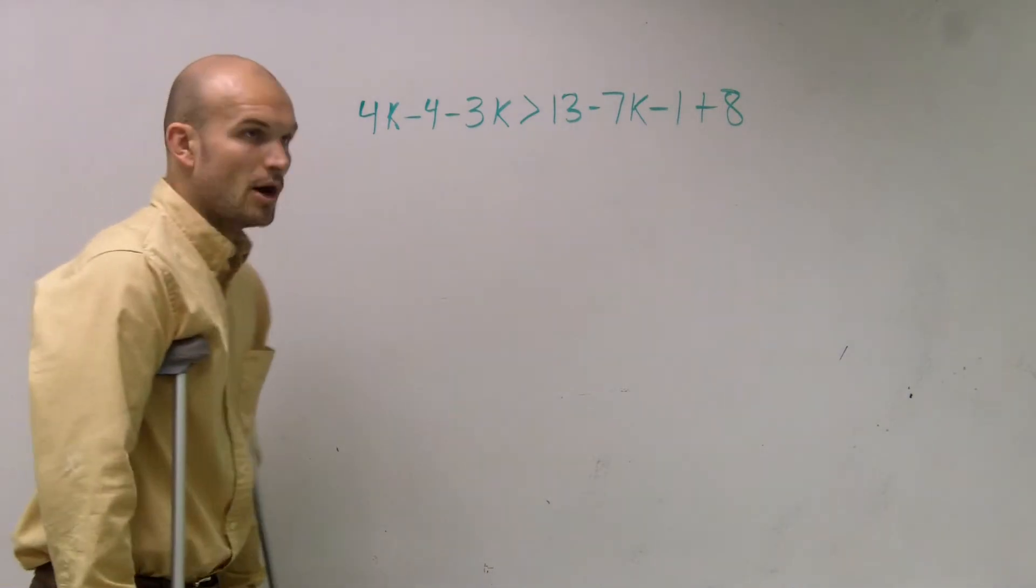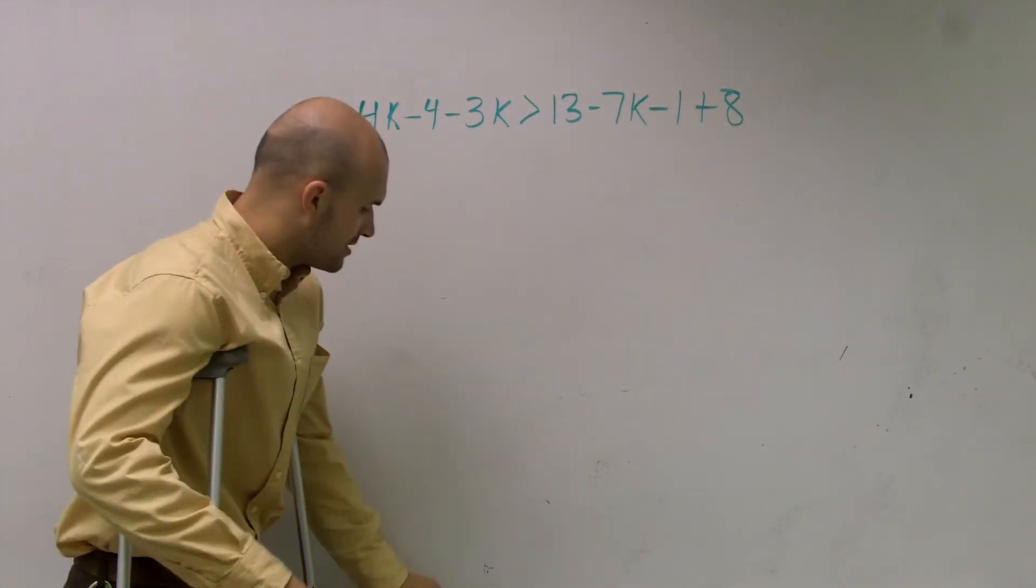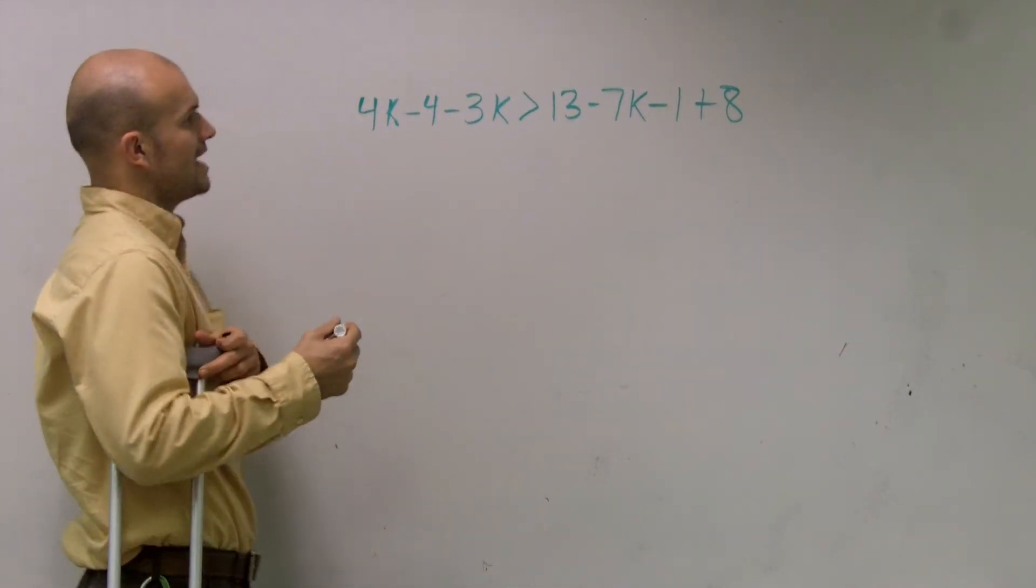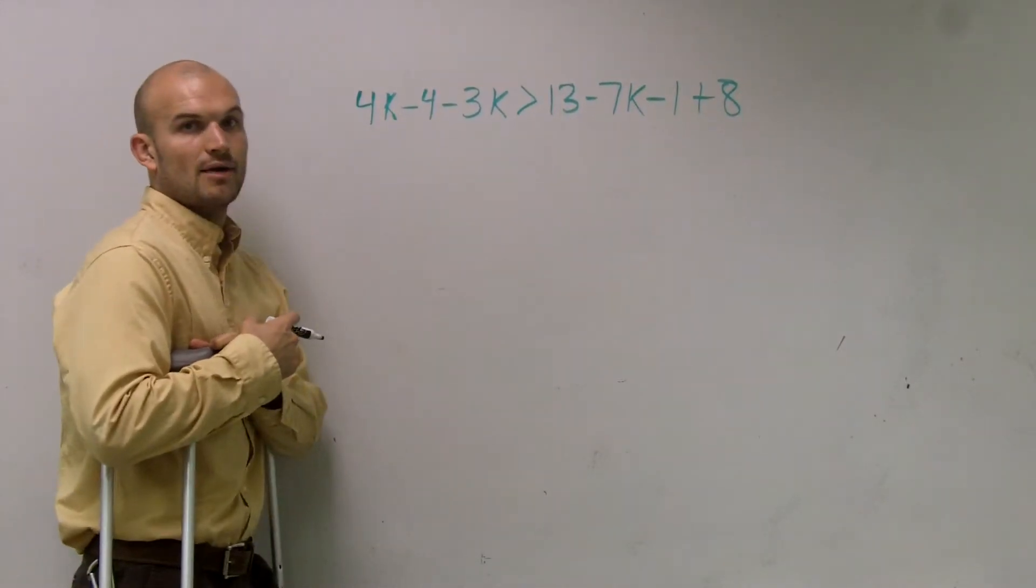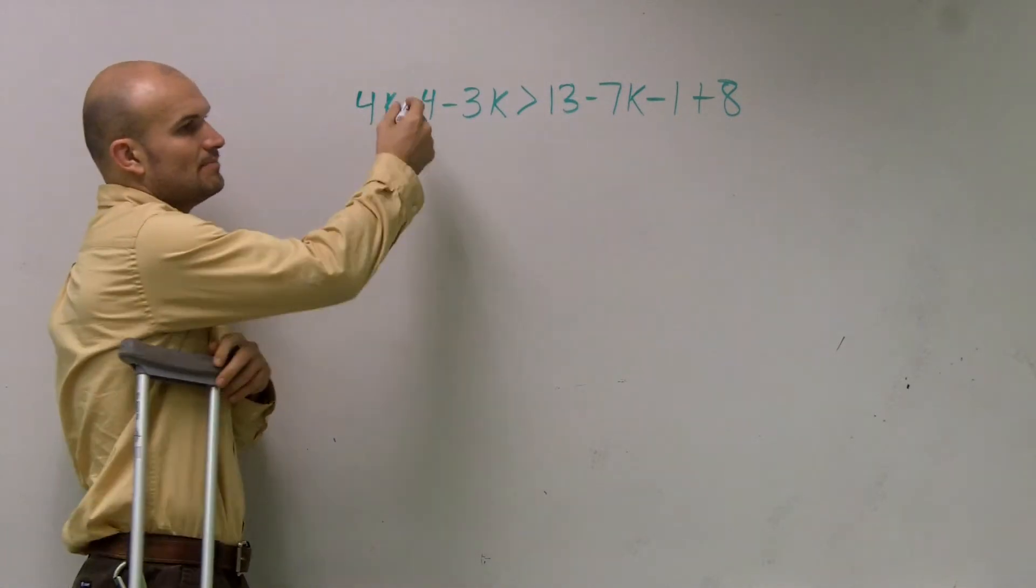You guys notice there's a lot of multiple k's up here, right? And remember, the purpose of this is to solve for a missing variable. So what you guys notice is I have a 4k and a negative 3k both on the same side. So what I need to do is I need to combine these two.